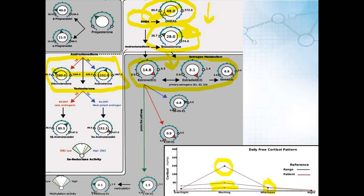Looking at the estrogens in more detail, you would expect that if primary estrogens are high, the downstream metabolites would likewise be high — but that's not the case for the 2-hydroxyestrogen pathway, which is the preferred and protective pathway for clearing estrogens. It's relatively low, whereas the toxic 4-hydroxy E1 — which creates a lot of DNA damage — is actually elevated. A doctor might recommend diindolylmethane (DIM), indole-3-carbinol, or increased cruciferous vegetable intake, since those compounds increase this good 2-hydroxylation pathway, which will decrease the elevated primary estrogens and reduce estrogen dominance.